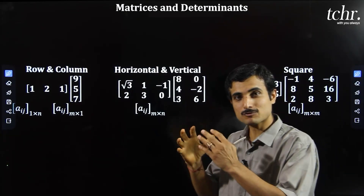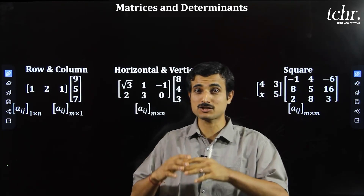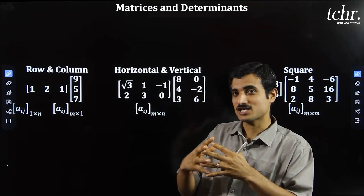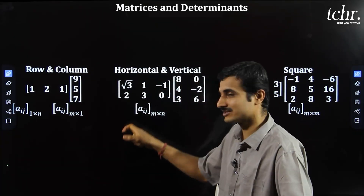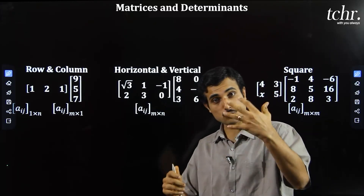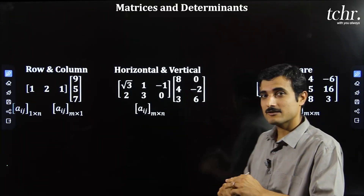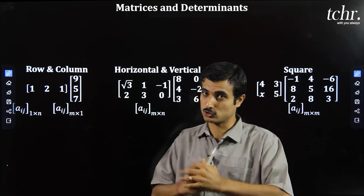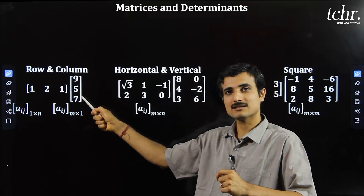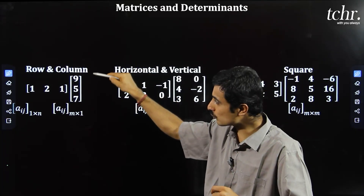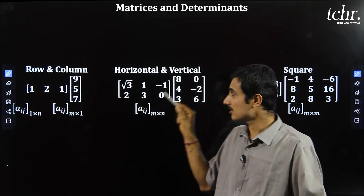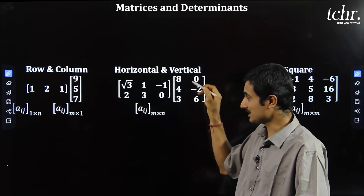Matrices and determinants chapter — in CET, 7 to 8 questions come from this. Matrix and determinants — if you skip this, you lose marks. So now, types of matrices: first, row matrix — one single row; column matrix — one single column; horizontal matrix — rectangle shape; vertical matrix — rectangle but more rows than columns.